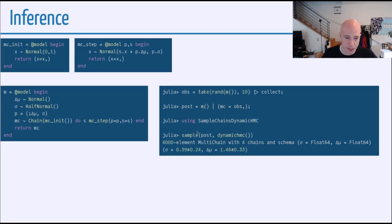And then we can, for example, using dynamic HMC, we can say using SampleChainsDynamicHMC, this loads the SampleChains package, the SampleChainsDynamicHMC package, and of course, also the DynamicHMC package itself. Then we can call sample on the posterior using dynamic HMC, and the thing we get out is four chains that have this representation.